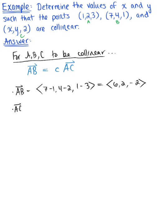And we have vector AC, which here is defined as x minus 1, y minus 2, 2 minus 3, which leaves us with x minus 1, y minus 2, and negative 1.